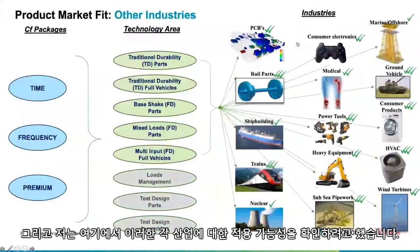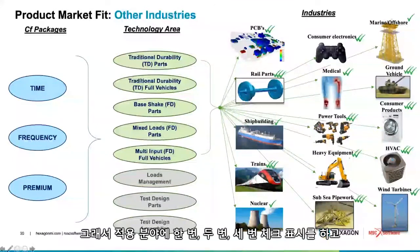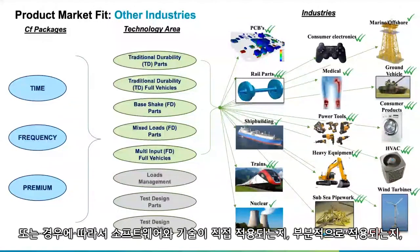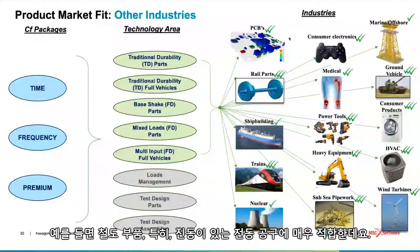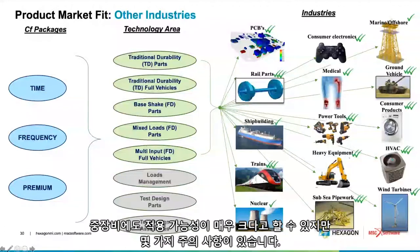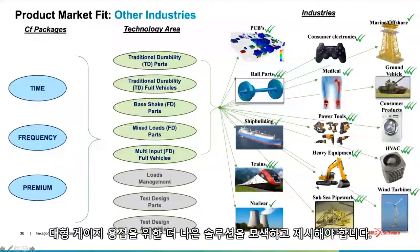For each of these industries, I've tried to identify the level of applicability — giving them either one tick, two ticks, or three ticks, or a cross, telling us whether the software and technology is directly applicable, partly applicable, only a little applicable, or not applicable at all. For example, to railway parts it's very applicable. Power tools — very applicable. Heavy equipment — very, very applicable. But there are some caveats; for example, one of the things we deal with on heavy equipment is large welds, and that's something we have to come up with better solutions for.